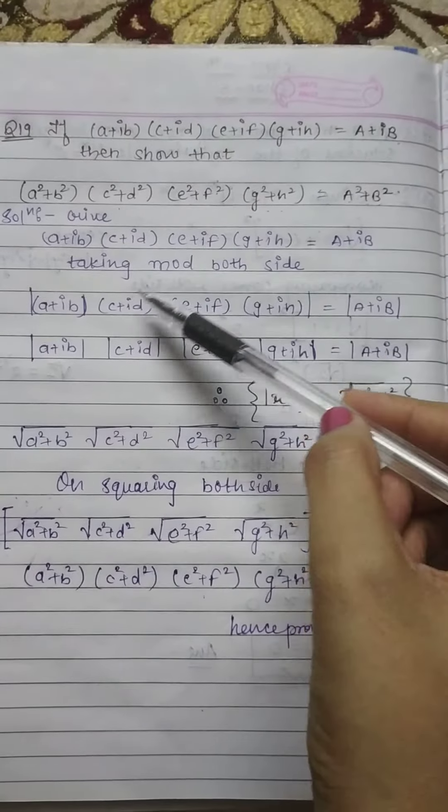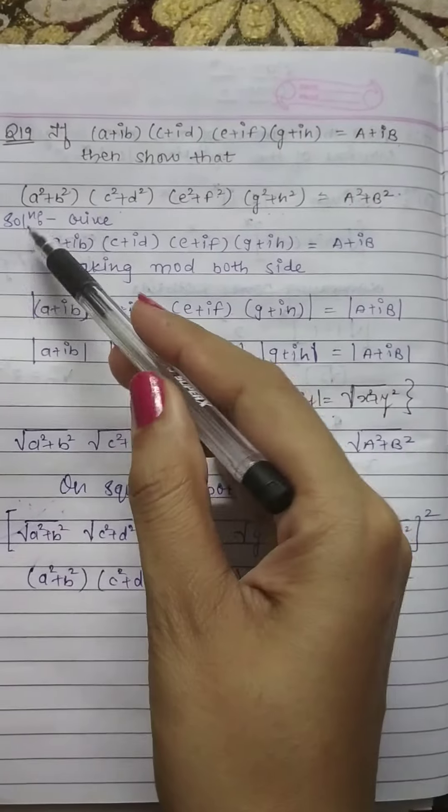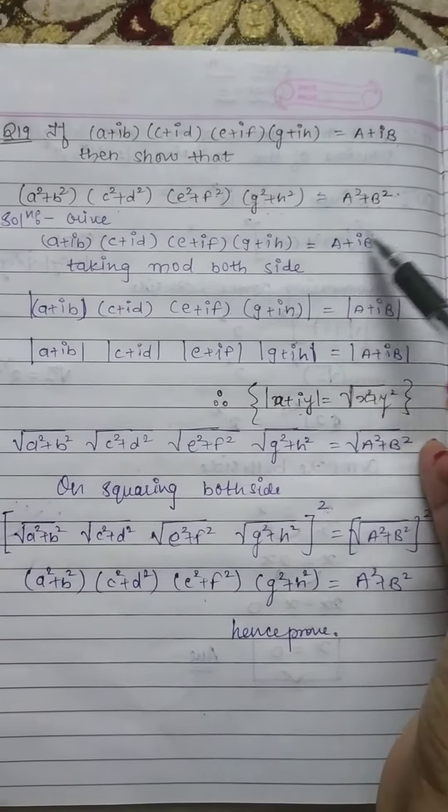Now what do we do? Taking modulus both sides. We take modulus on both sides. Here we have also made modulus.